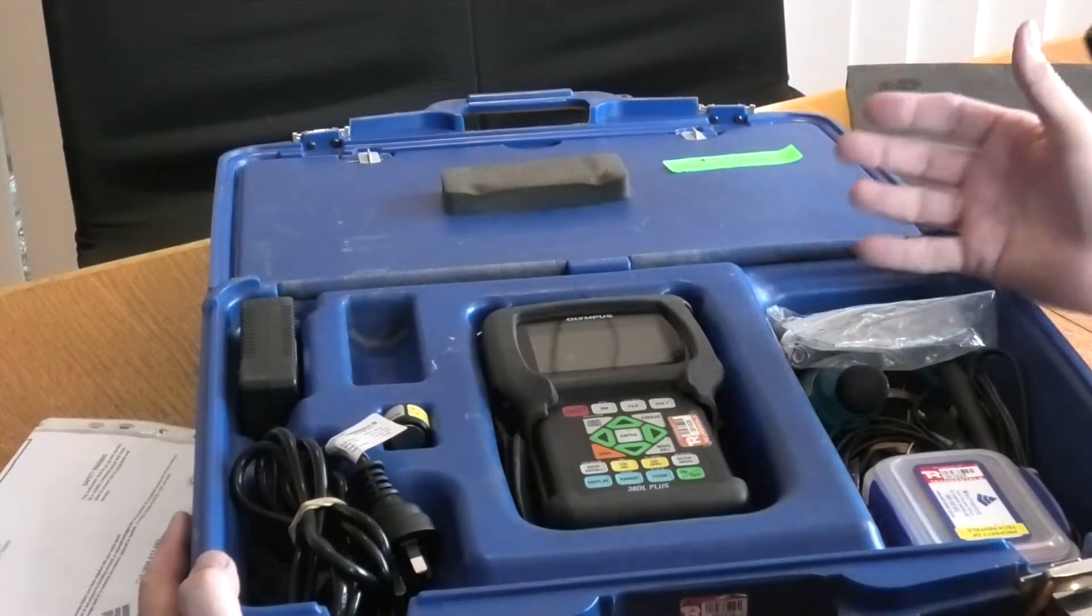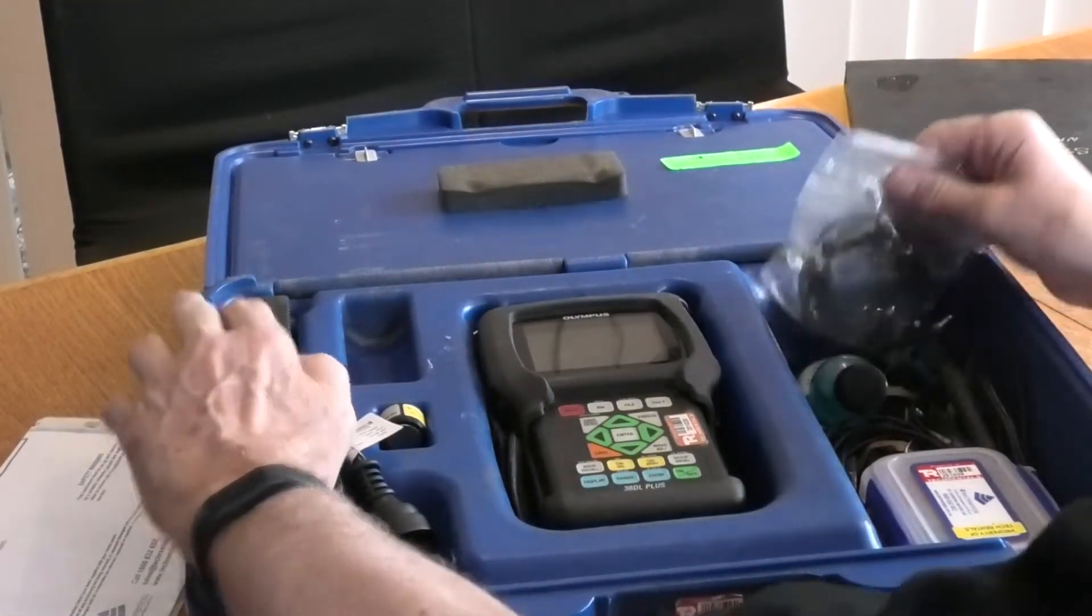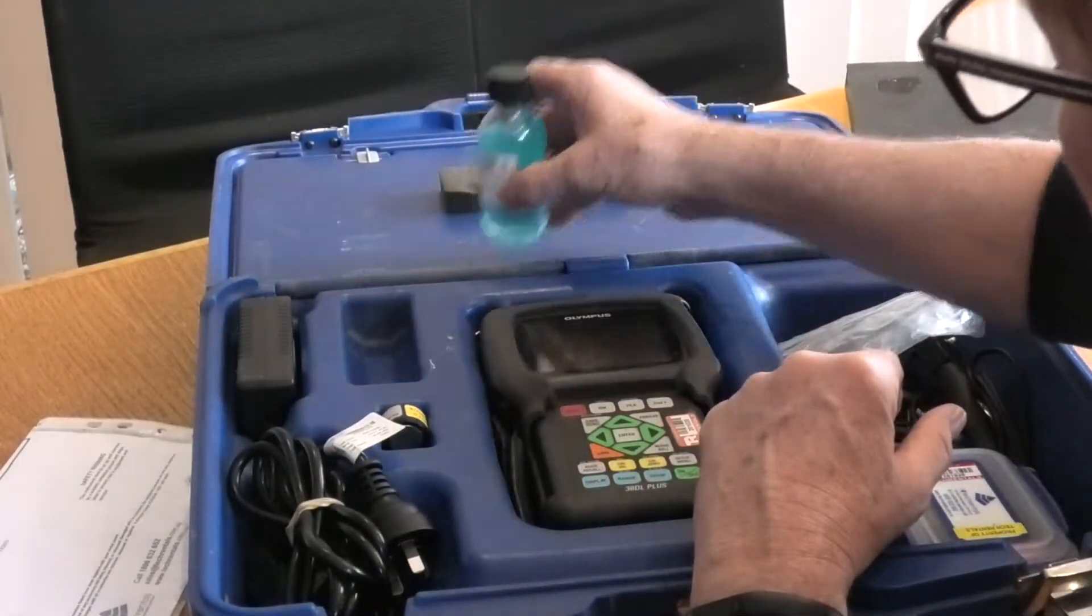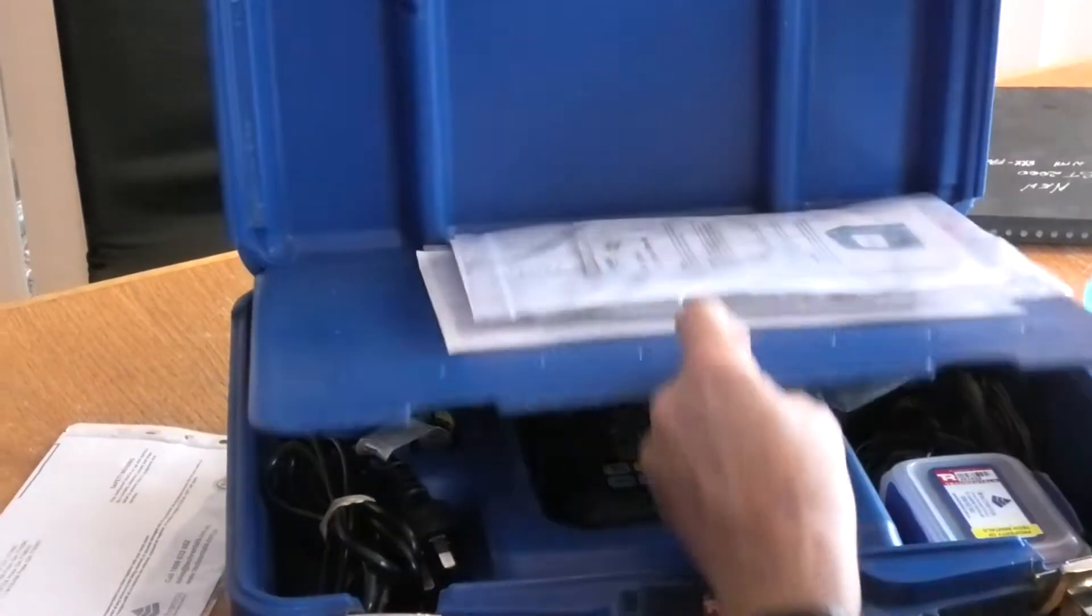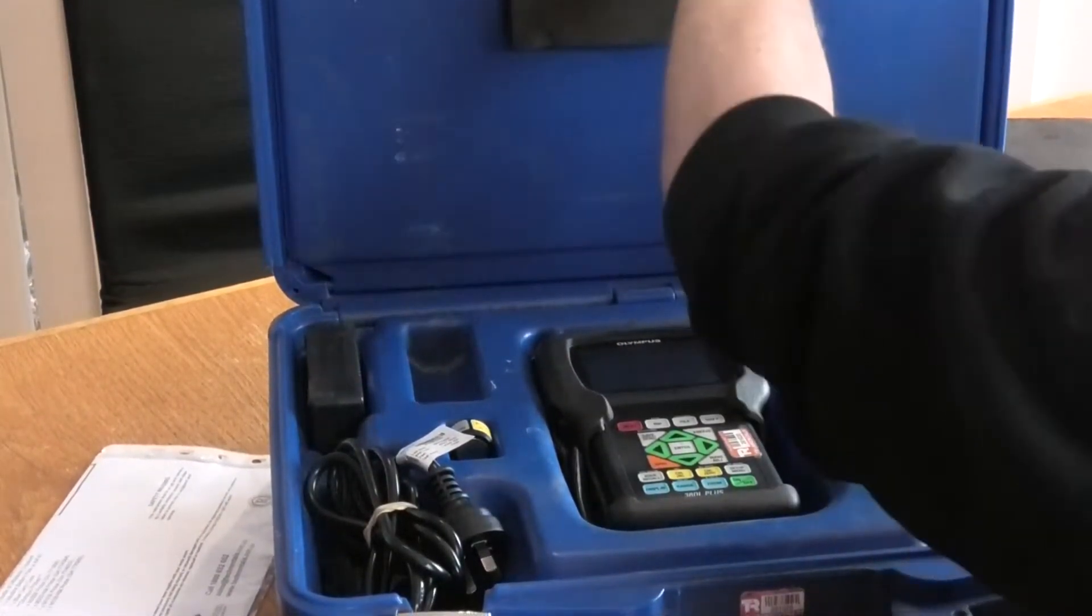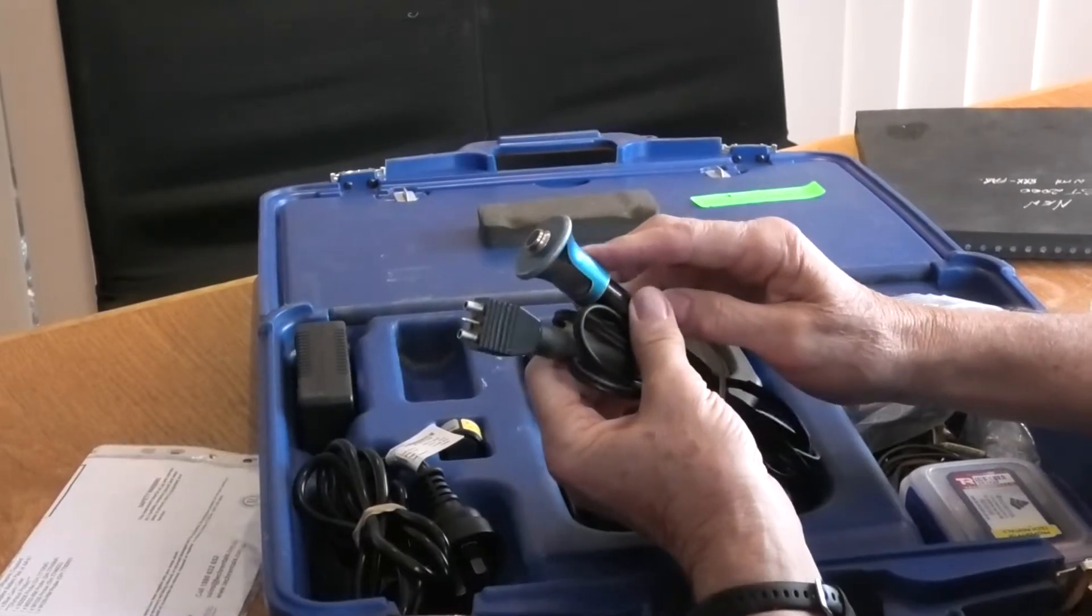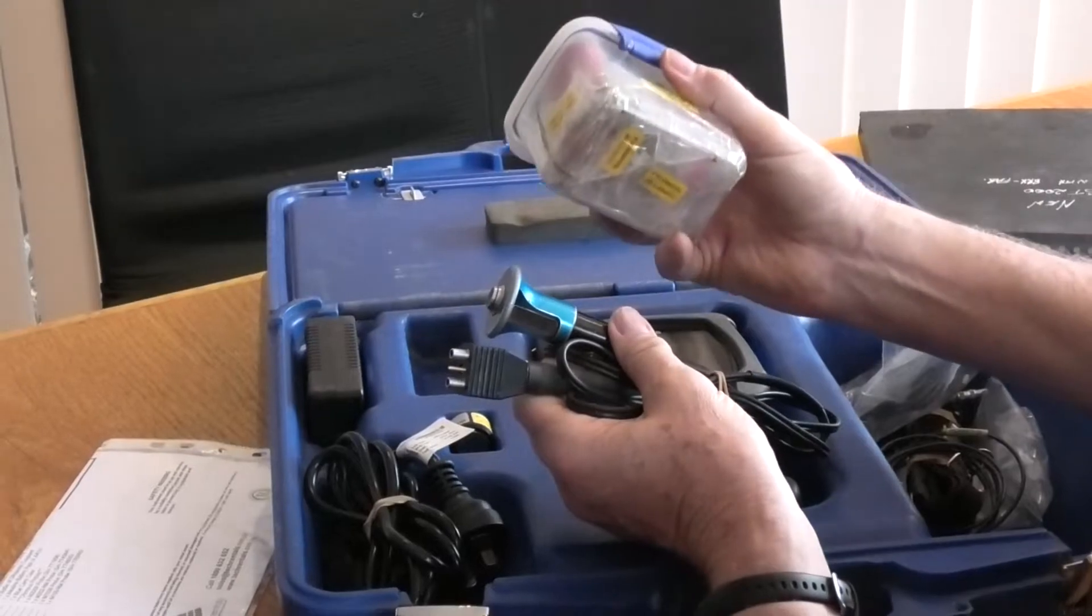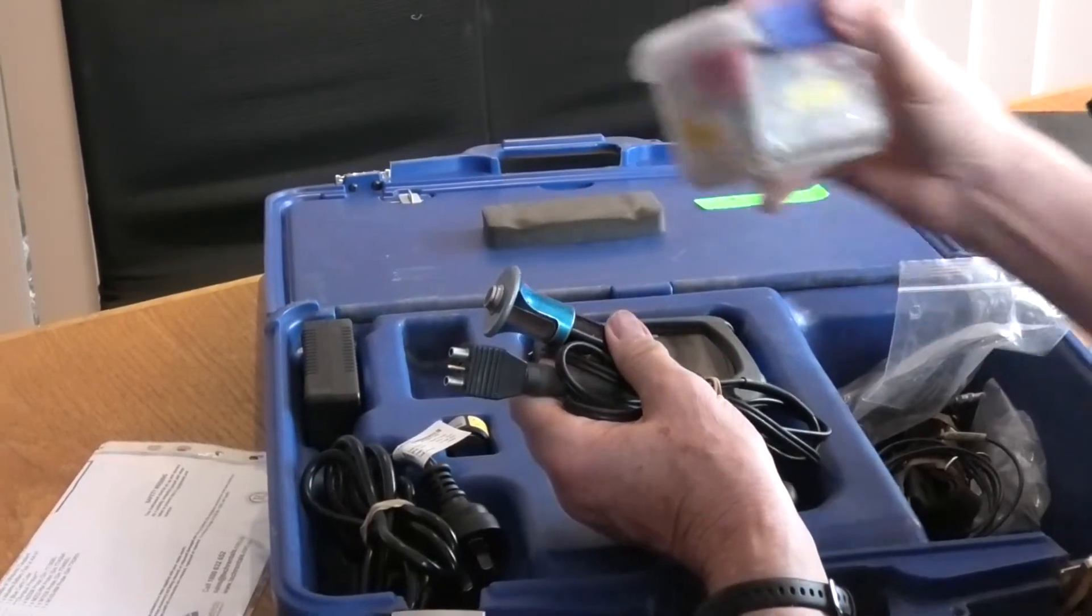Okay, in the kit we've got the gauge itself, a power supply for recharging, a little bit of couplant, and in the back of the box there's a couple of manuals which we'll refer to later. This is a standard gauge for measuring steel, it's a twin gauge, and we've also got all these other transducers for measuring the other materials.